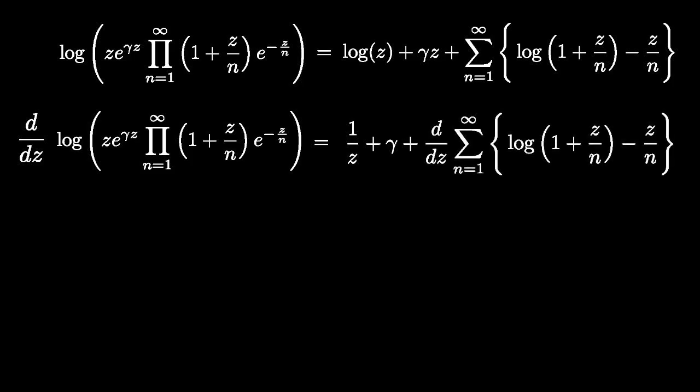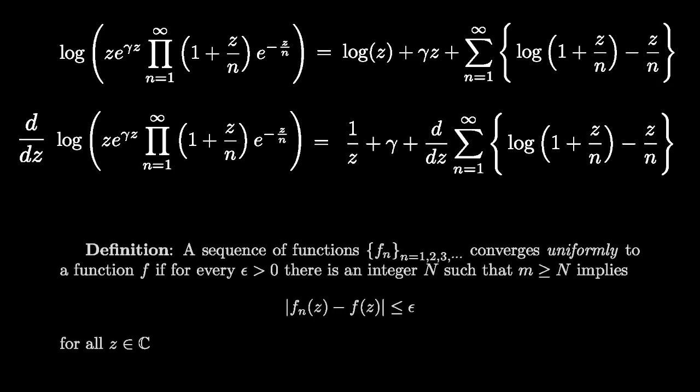Let's pause for a moment and recall the definition of a uniformly convergent sequence of functions. We say that a sequence of functions converges uniformly to a limit if for every epsilon greater than 0, there's an integer n such that m greater than n implies the expression shown here.